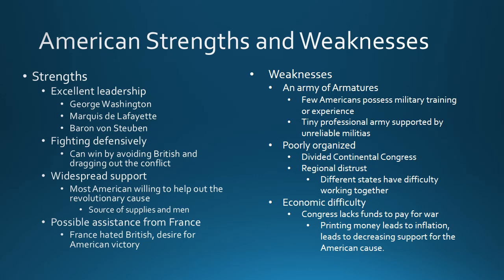Finally, there were huge economic difficulties. Congress lacked the funds to pay for the war, so they began to print paper money. They printed so much that the money itself began to lose value — there was tons of money floating around but not enough goods, so prices rose dramatically. You would need thousands and thousands of dollars just to buy basic goods like food or clothing. This is called inflation, when money loses its value and prices shoot up. This upset many colonists and led to decreasing support for the American cause.